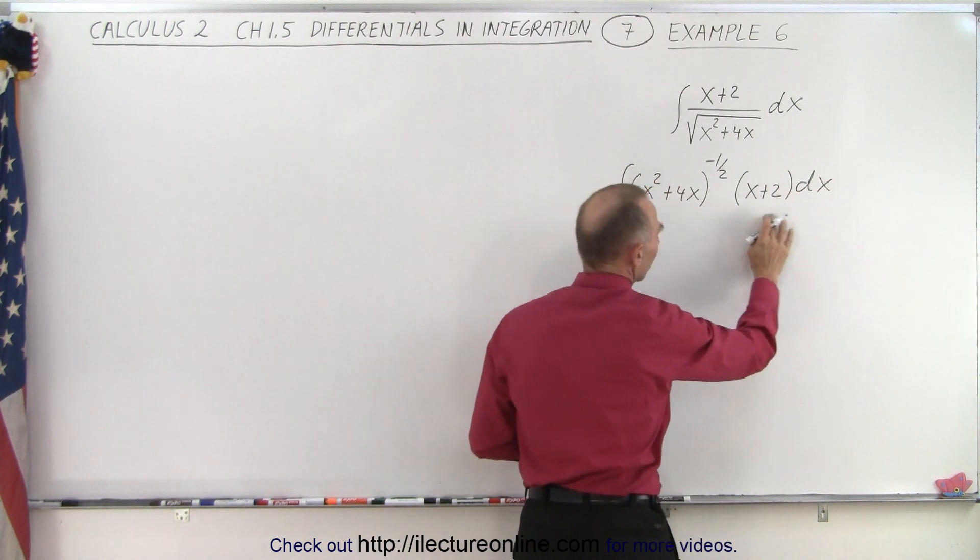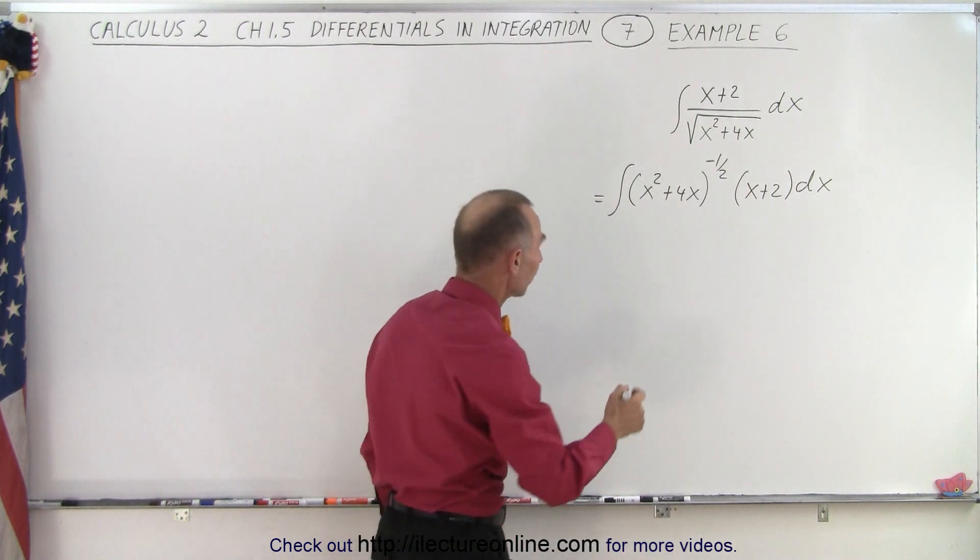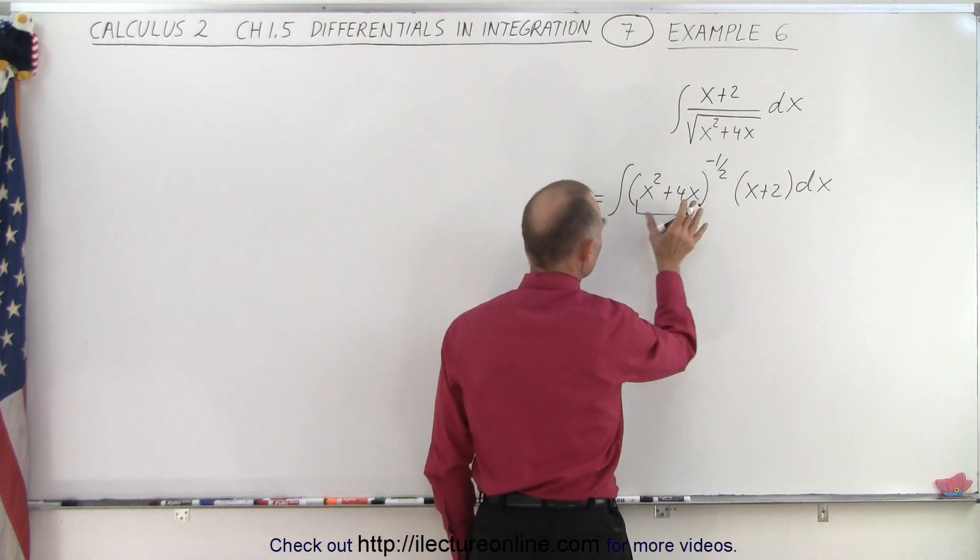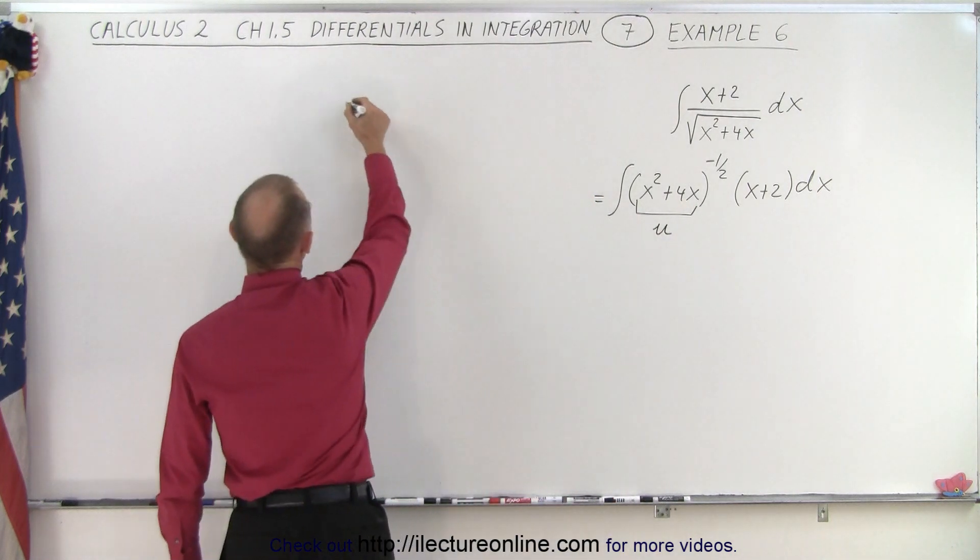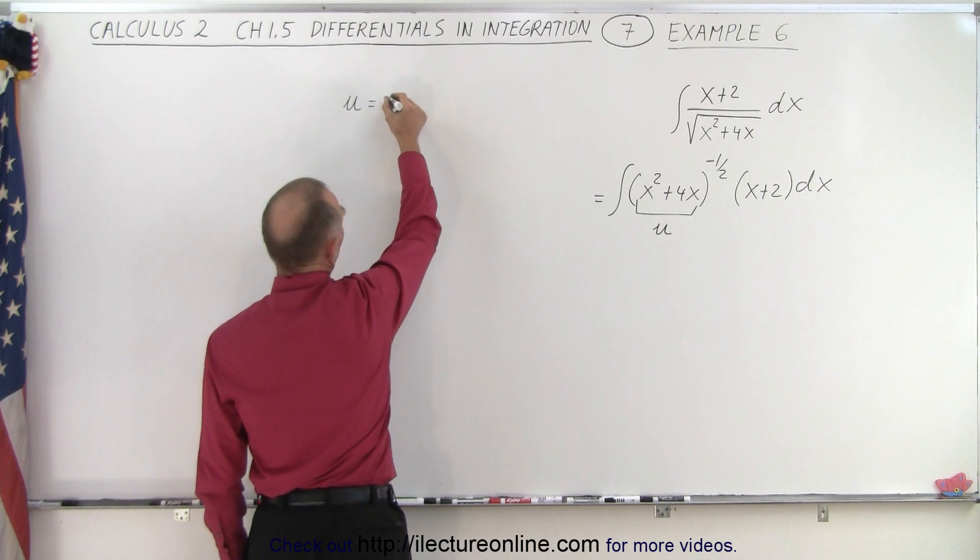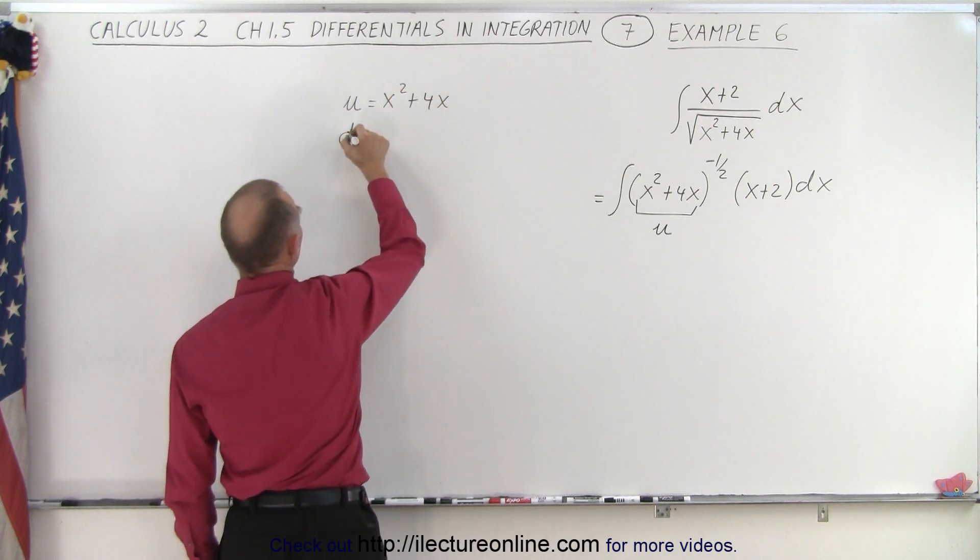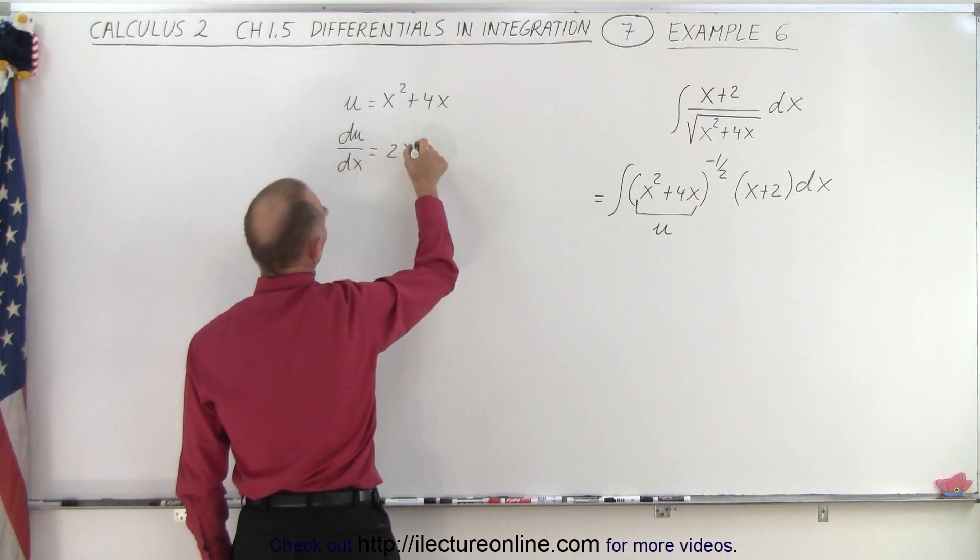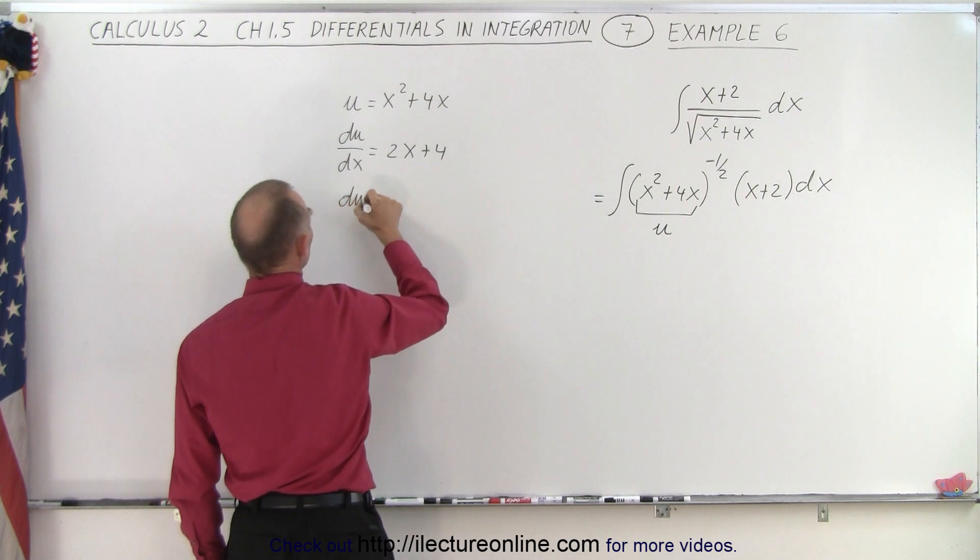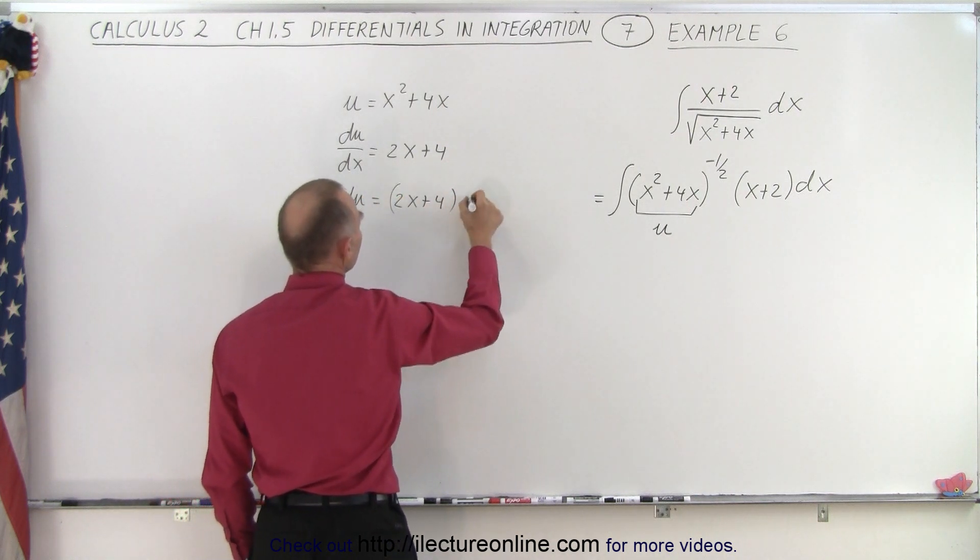Now the question is, is this the proper differential of this so we can integrate it? Well, in order to figure that out, we can call this quantity here inside the parentheses u. Then u is equal to x squared plus 4x. That means that du/dx, the derivative with respect to x, is equal to 2x plus 4, and so therefore du is equal to 2x plus 4 times dx.